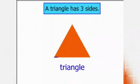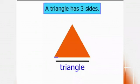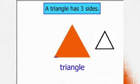Now what about this shape? This is a triangle. A triangle has 3 sides — 1, 2, 3. Tell me what shape is this? It is a triangle. Very good.